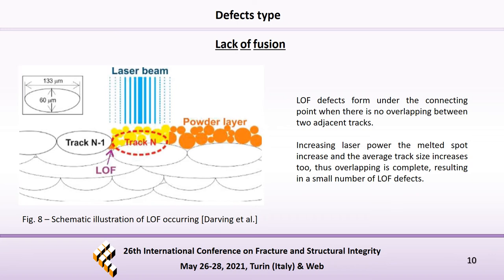Another type of defect in AM parts is lack of fusion defects. They form when the energy density is not strong enough to melt the entire desired region, or when the scan speed is too fast, because in this case the solidification rate is higher and the molten pool has no time to fill all the substrate. There is also another reason: if the melt spot is not big enough and there is no overlapping, lack of fusion defects form under the connecting point, as shown in this figure. When the laser power value increases, the melt spot increases and the average track size increases too, so overlapping is complete, resulting in a small number of lack of fusion defects.